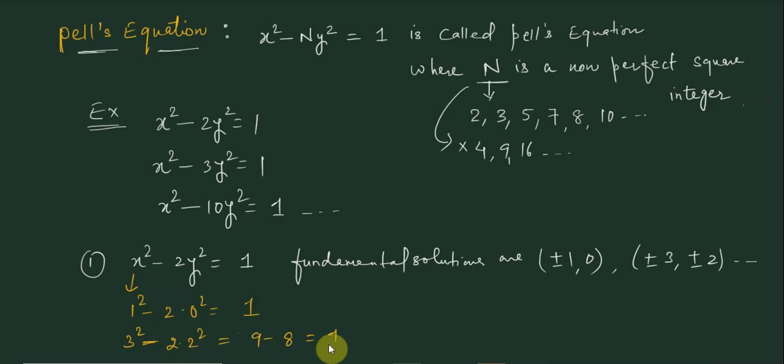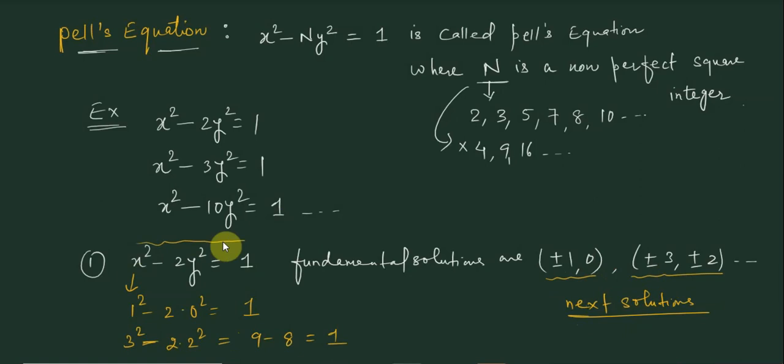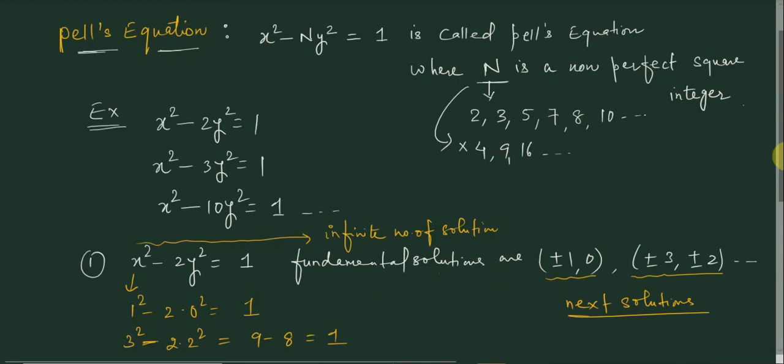So those are some fundamental solutions of the given Pell's equation. But what are the next solutions? Such types of equations have an infinite number of solutions. If we have infinitely many solutions, what is the idea by which we can get more solutions other than the fundamental solution? Before that, we look at the concept of Gaussian integers and their norm.